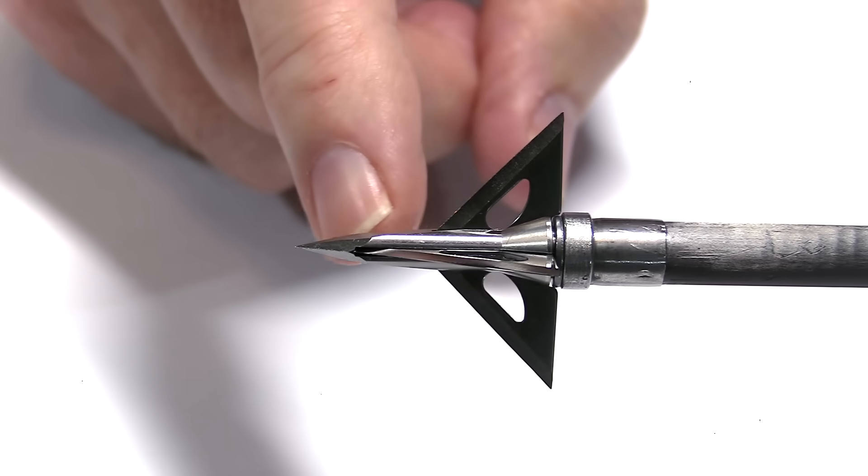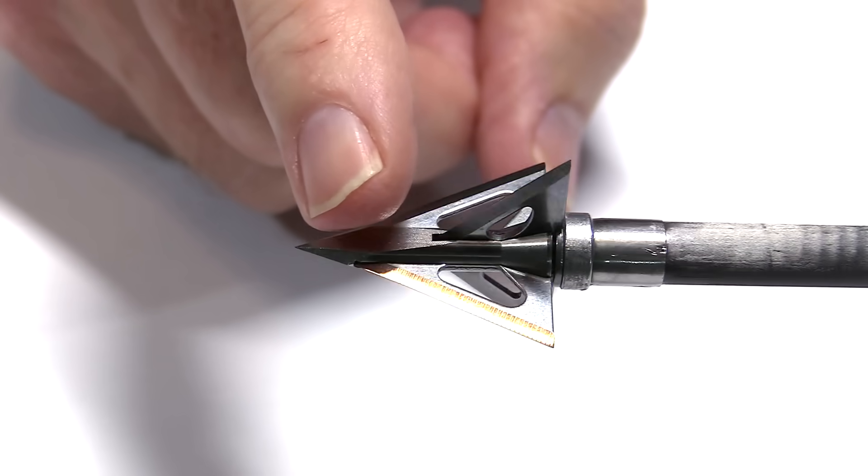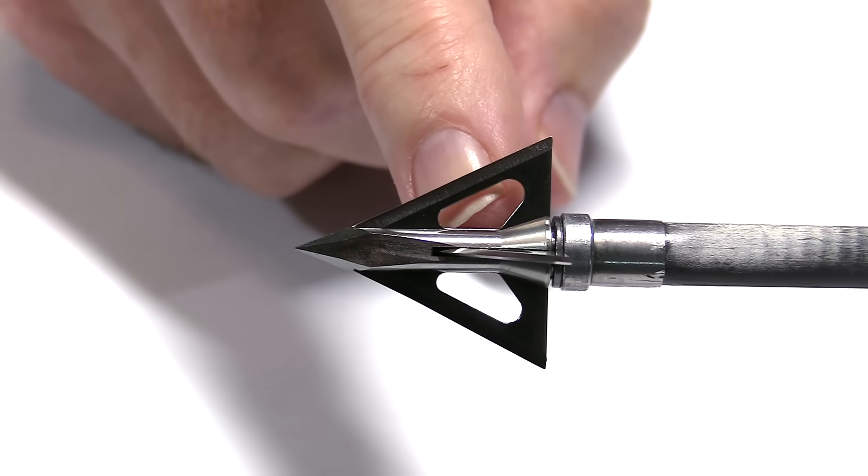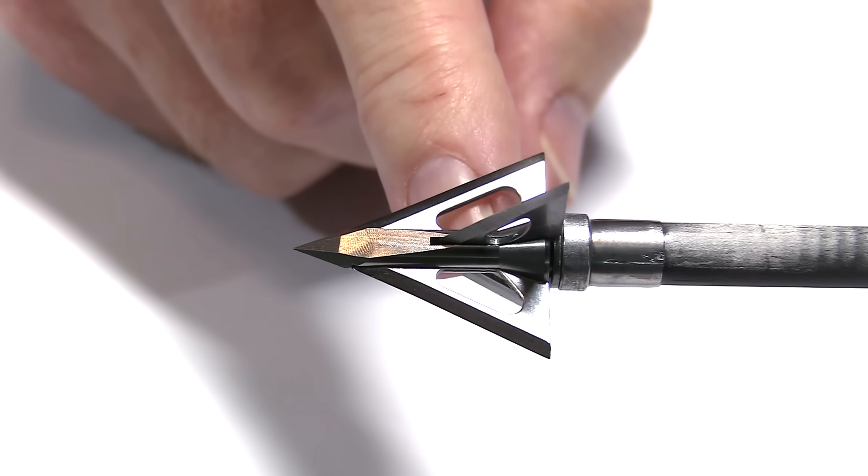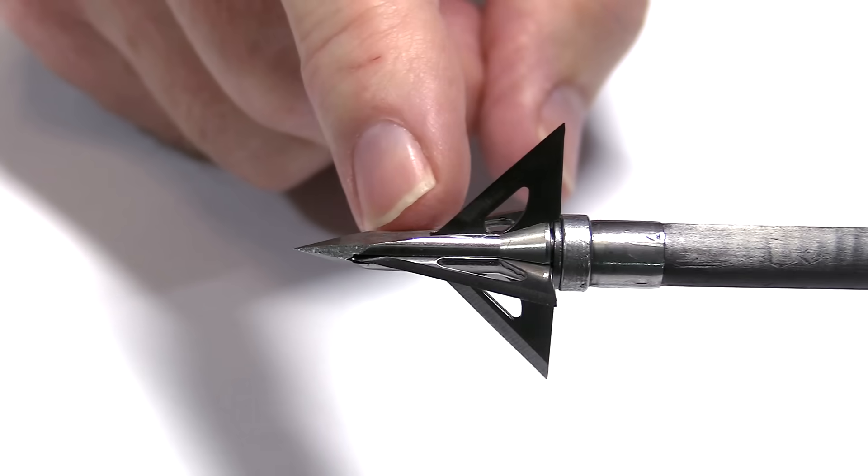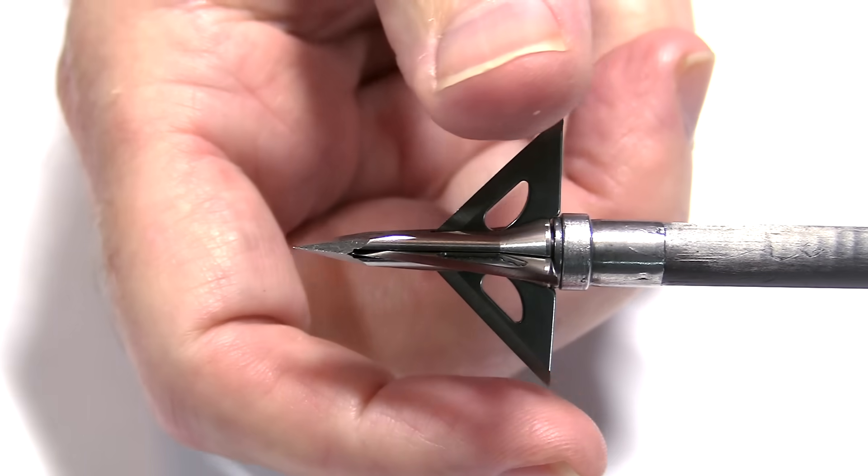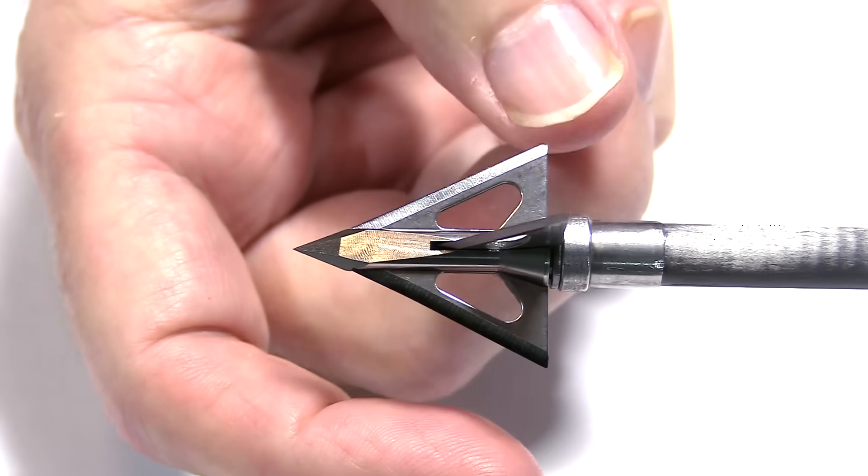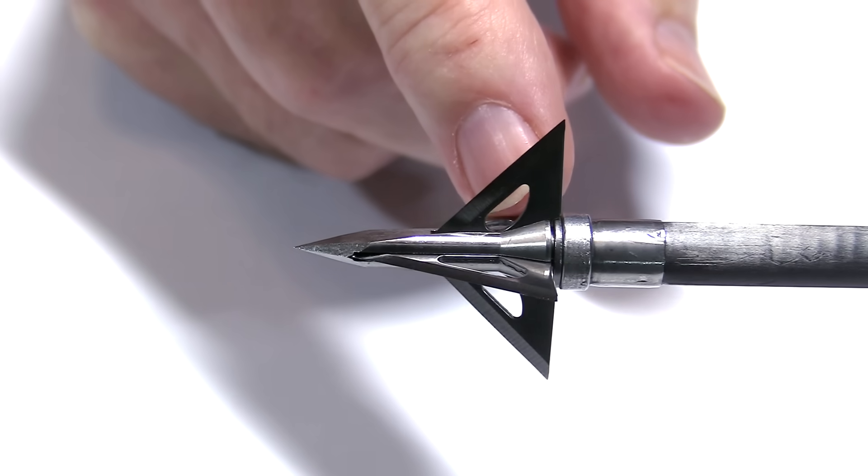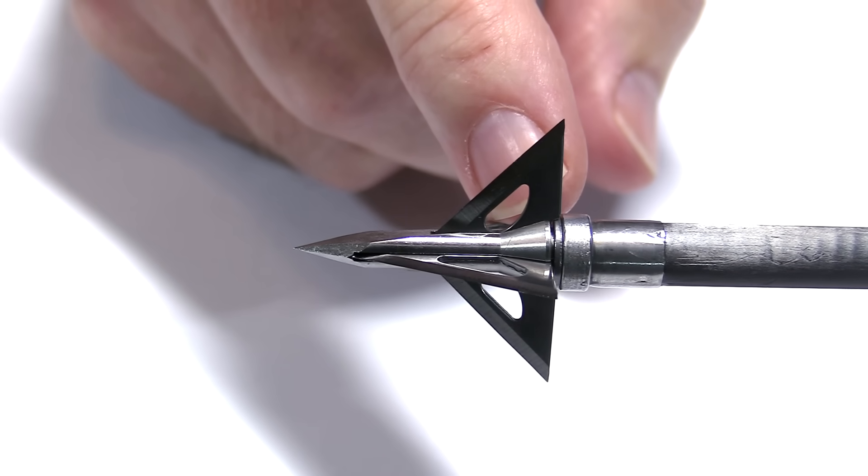They're not quite as impact resistant I've found, the ferrules especially, as the carbon steel. But everything's a trade-off. They certainly have their advantages and are certainly really strong just the same. So again this is all steel, all stainless steel. The cutting diameter is one and a quarter inches by one and one sixteenths inches for a total cut of two and five sixteenths inches. That's a lot of cut for a fixed blade broadhead.